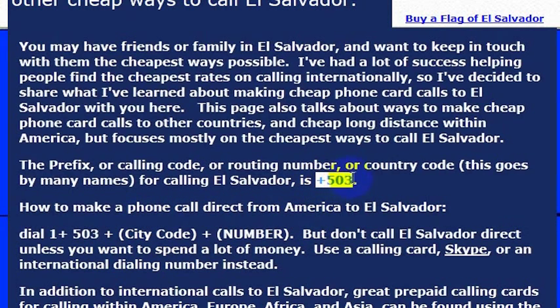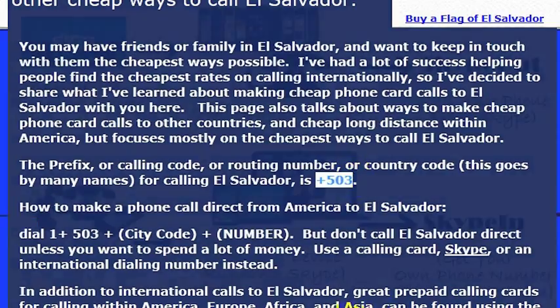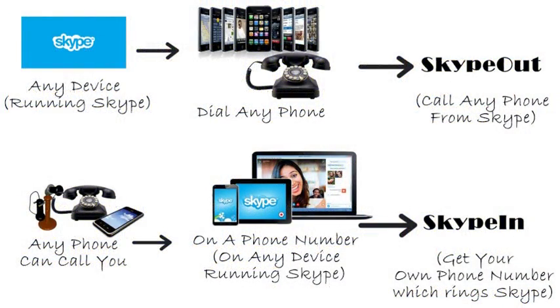The country code for El Salvador is 503. But I wouldn't really recommend calling direct — your phone company will charge you a lot of money.